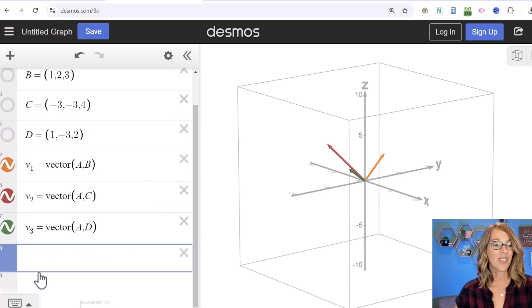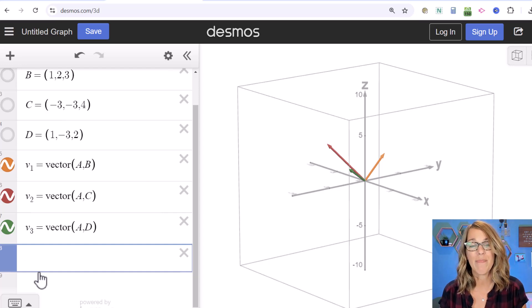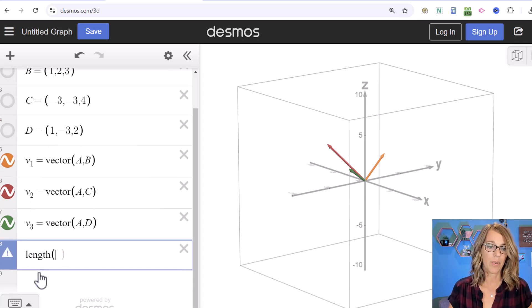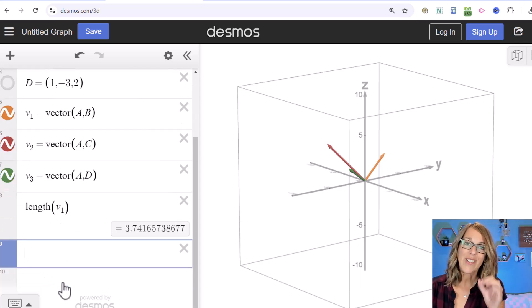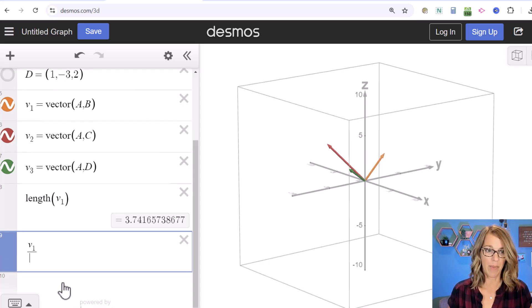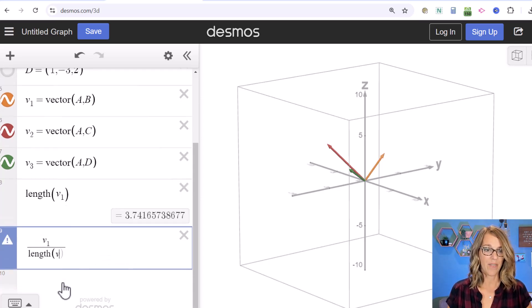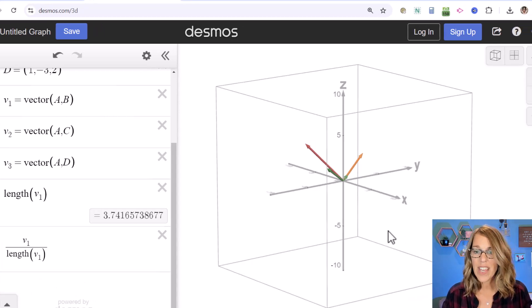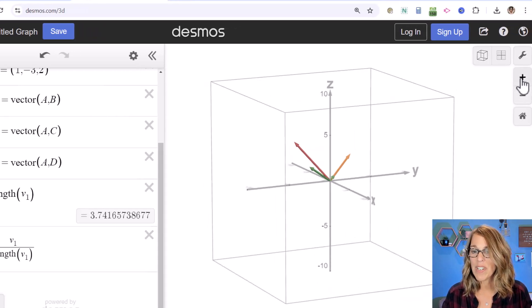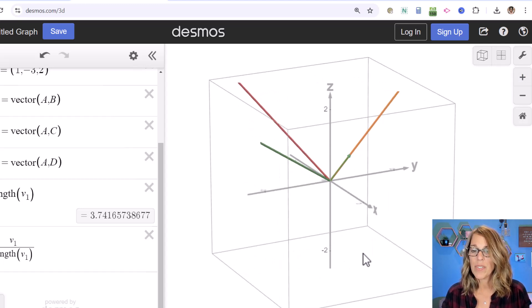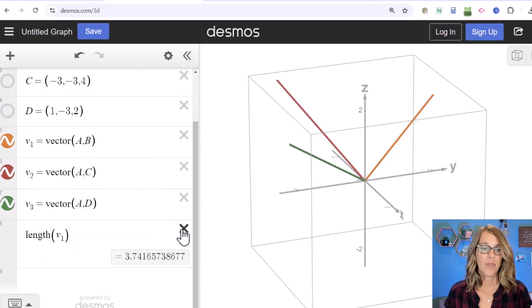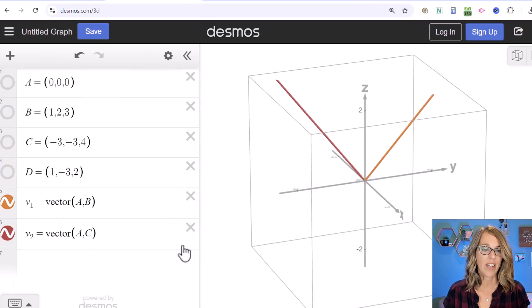We can also calculate magnitude using the length function: length(v₁). If I want the unit vector in the direction of v₁, I can do v₁/length(v₁), which gives me that light green unit vector. Let me zoom in so you can see it better. I'll remove a few of these so we just have vectors 1 and 2.